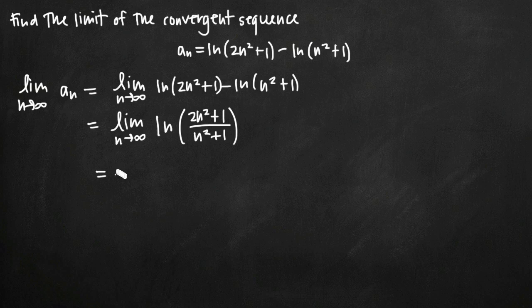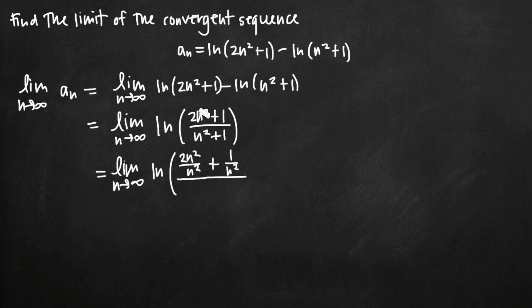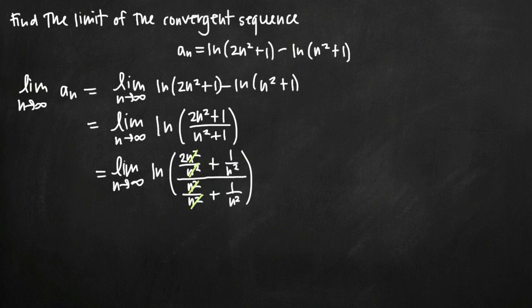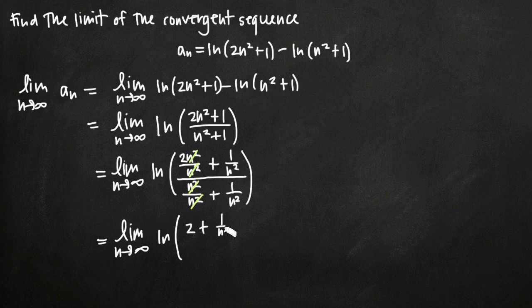So we'll get the limit as n goes to infinity of the natural log, where in the numerator we get 2n squared over n squared plus 1 over n squared, and in the denominator we get n squared over n squared plus 1 over n squared. The n squareds cancel in the first term leaving 2, and cancel in the second leaving 1. This simplifies to the limit as n goes to infinity of the natural log of the quantity 2 plus 1 over n squared, all divided by 1 plus 1 over n squared.